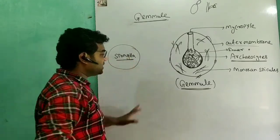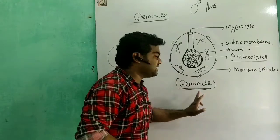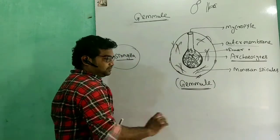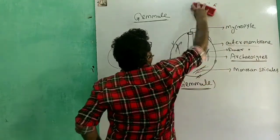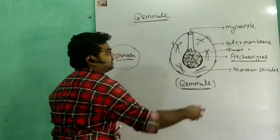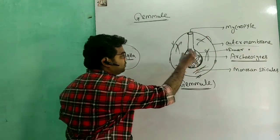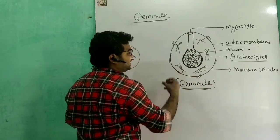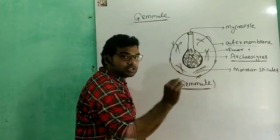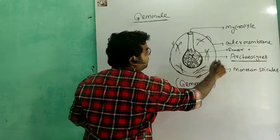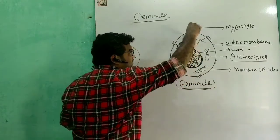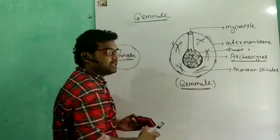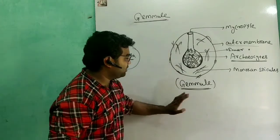This is the internal bud — the gemmule. The gemmule is a small group of cells, the same as archaeocytes, and the archaeocytes exit through the micropyle.